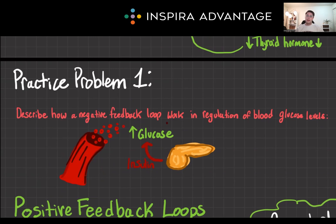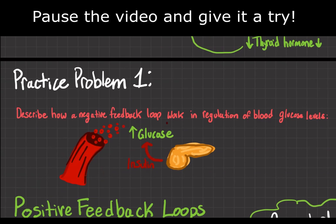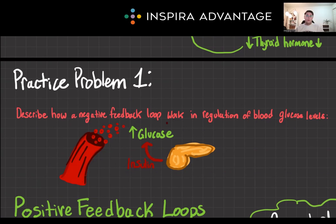Describe how a negative feedback loop works in the regulation of blood glucose levels. One possible answer: when blood glucose levels rise, the pancreas will start to secrete insulin — the little squishy orange thing on the right is supposed to be a pancreas. This is going to facilitate glucose uptake by cells, which will lower blood glucose. Glucose is leaving the blood into cells, into muscle, into tissue. As glucose levels decrease, insulin secretion will diminish as well.